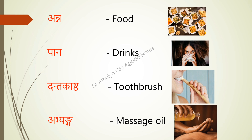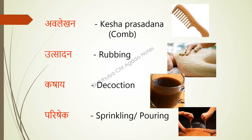First comes Anna — that means by means of food. Next is Pana — through drinks. Then third is Dandakashta — that is the toothbrush; by means of the toothbrush they administer the poison. Next is Abhyanga — that means by means of massage oil.